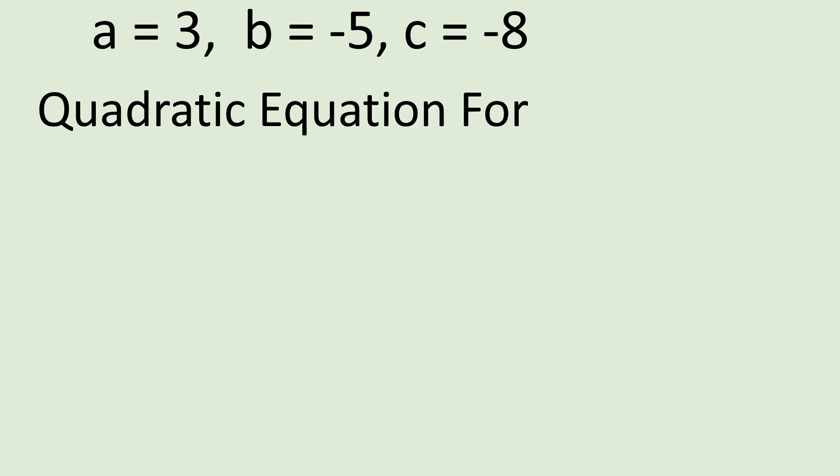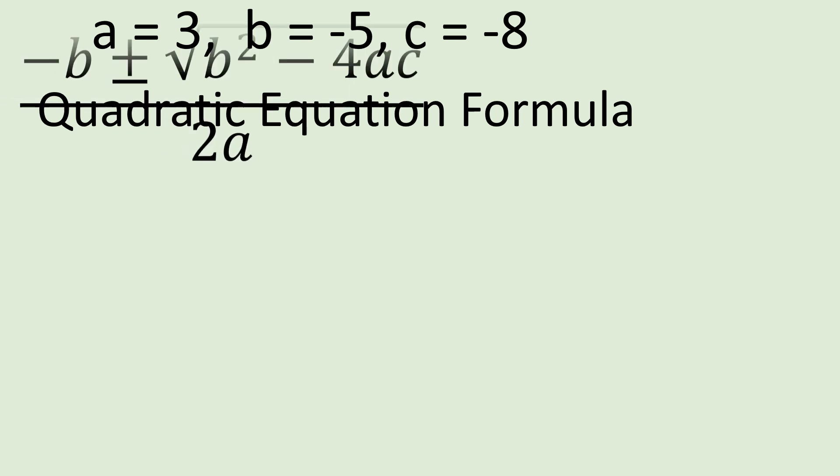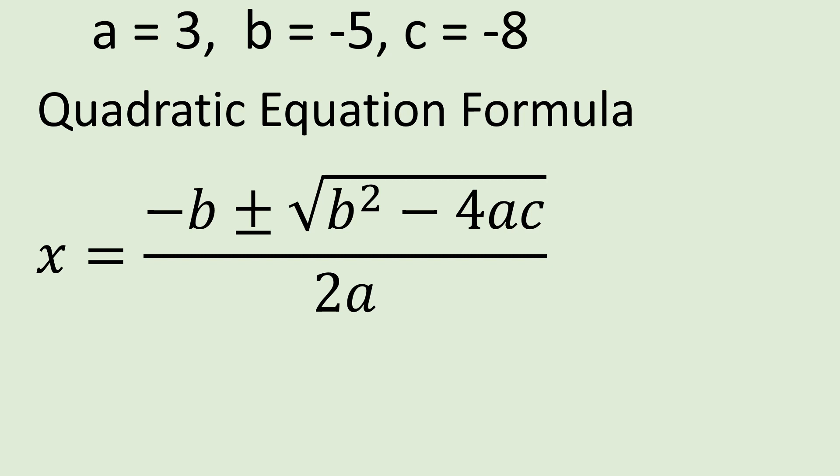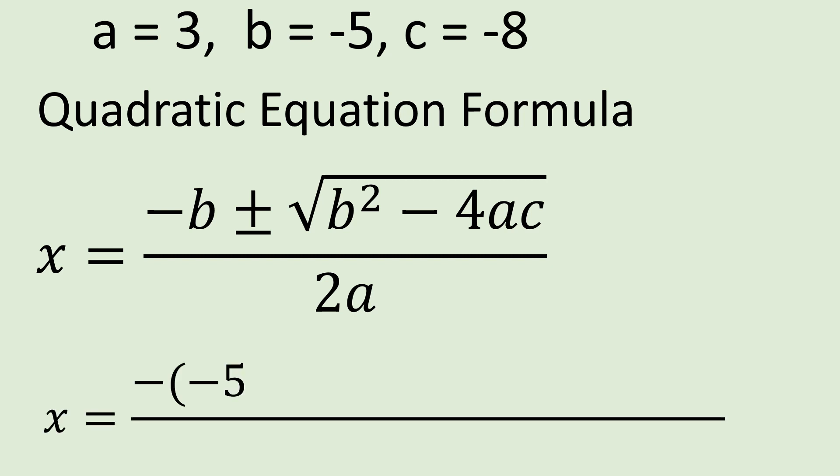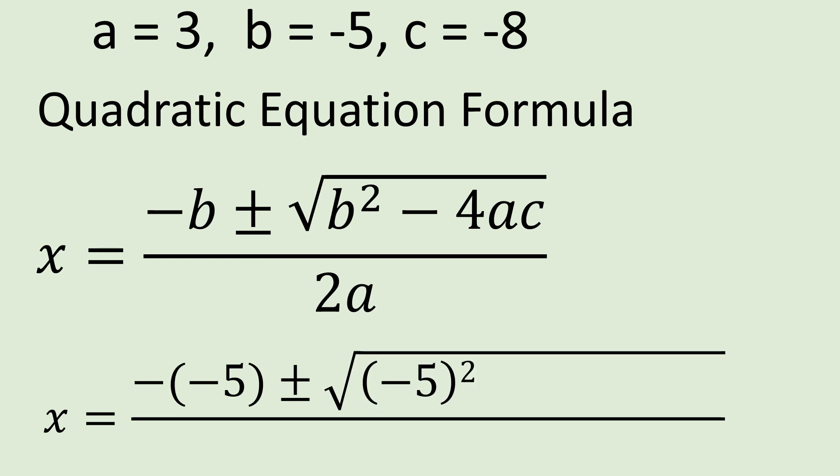Now we'll use the quadratic equation formula: x equals minus b plus or minus the square root of b squared minus 4ac, all over 2a. In this part of the world we call this the almighty formula. All we need to do is substitute the values of a, b, and c that we have identified.